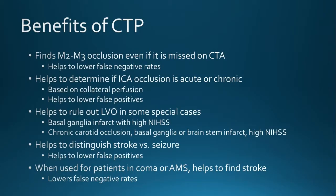Benefits of CT perfusion: it finds some M2 and M3 occlusions that could be missed elsewhere. It helps determine if an internal carotid artery occlusion is acute or chronic. It rules out large vessel occlusion in special cases — for example, basal ganglia infarcts with high NIHSS stroke scale, or chronic carotid occlusion with basal ganglia or brainstem infarct and high NIHSS. It can distinguish stroke versus seizure, which we actively use. And it's valuable for patients in coma or altered mental status where no one thinks about stroke.